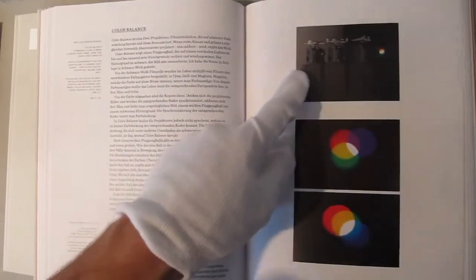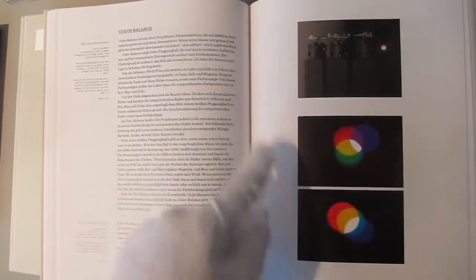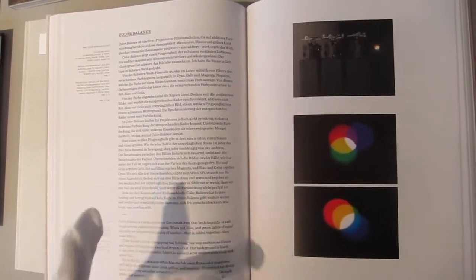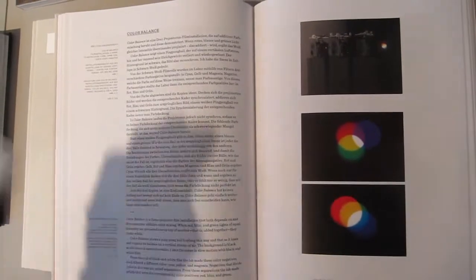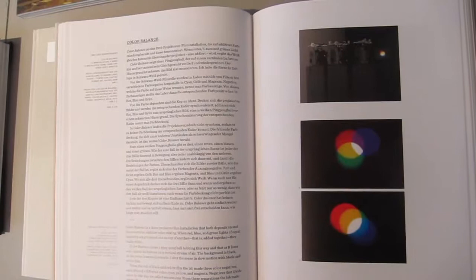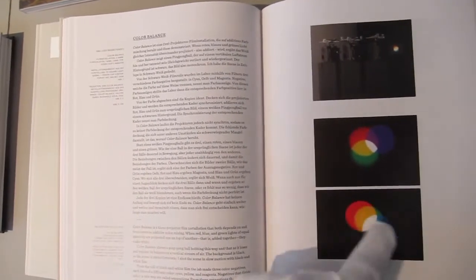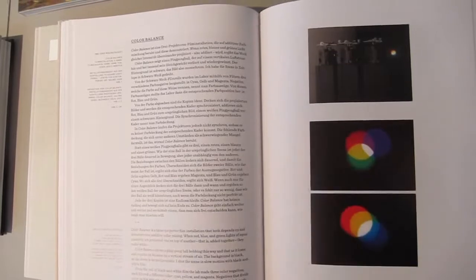This was another one. He would have three projectors and every projector he would have one color and they make the same movement but they're not screened at the same time. So they would move in a different way. And whenever they come across - since they are the three basic colors, they would then in the projection come back to white.